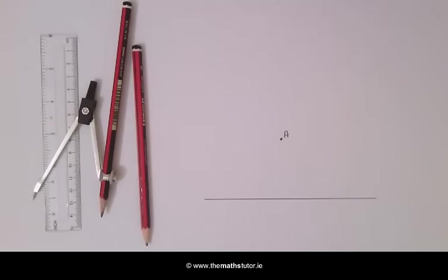We are going to construct a line parallel to a given line passing through a given point. There are two ways to carry out this construction and both of these need to be known. In the first method, we are going to use a compass and a straight edge.